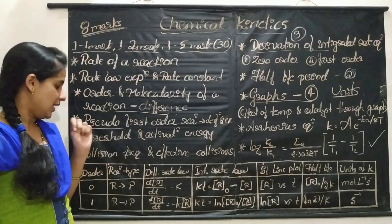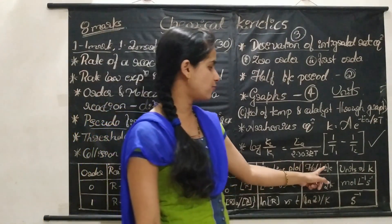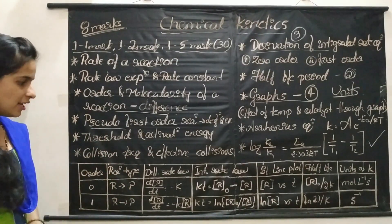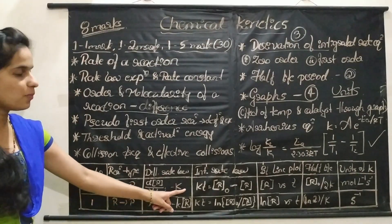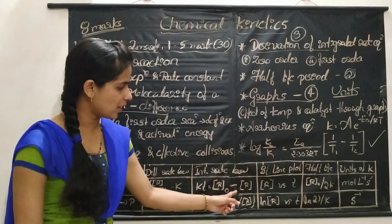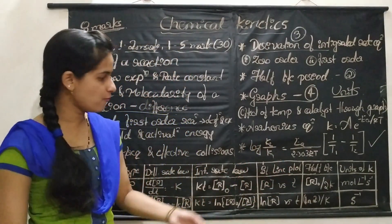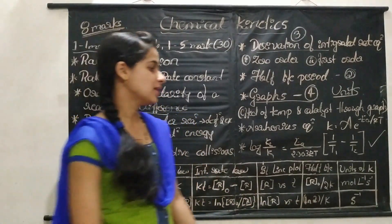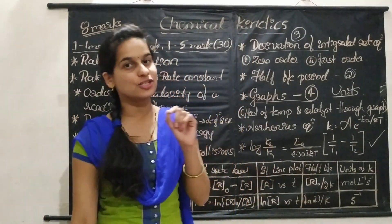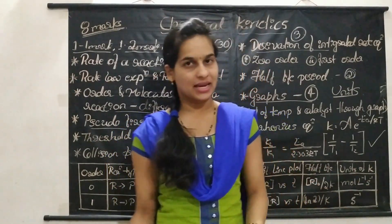This table is very, very important. It covers order, reaction type, differential rate equation, integrated rate law or rate expression, straight line plot, half-life period, and units of K. For zero order, consider the reaction R → P. The differential rate law is dR/dt = −K, where K is the rate constant. The integrated rate law is KT = R₀ − R, where R₀ is the initial concentration and R is the concentration of the reactant at time T. The straight line plot: if you plot concentration of R versus T, you get a straight line. The half-life period for zero order reaction is T½ = R₀ / (2K). The unit of rate constant K for zero order is mol per liter per second.